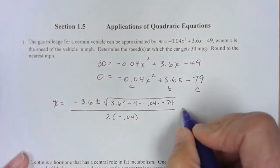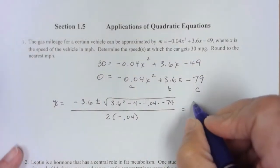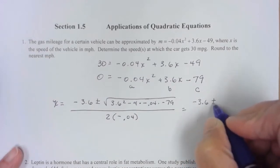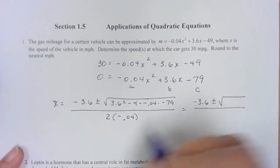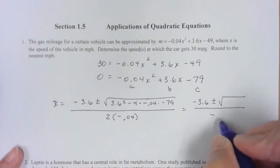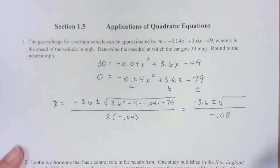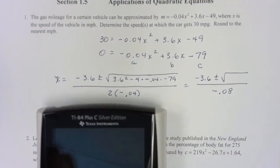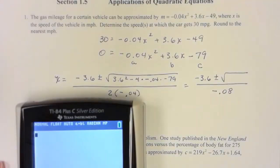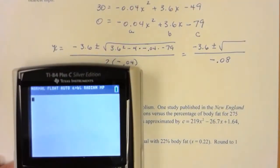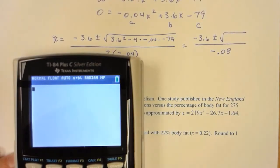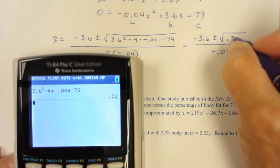So I need to do a little bit of cleanup. Let's see, I have negative 3.6 plus or minus something over that times that would be negative 0.08. So let me bring in my calculator. I can still see that. So 3.6 squared minus 4 times negative 0.04 times negative 79. So under my radical is 0.32.